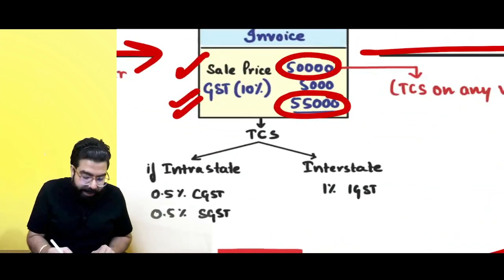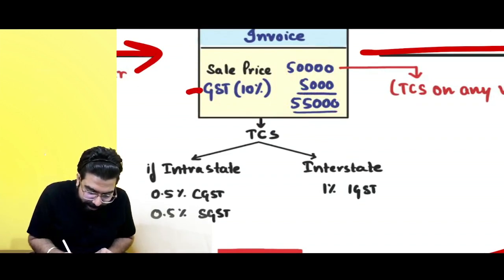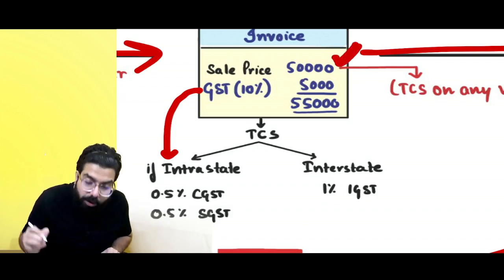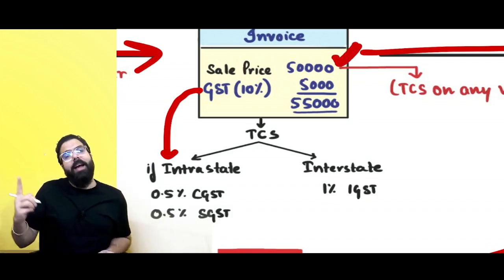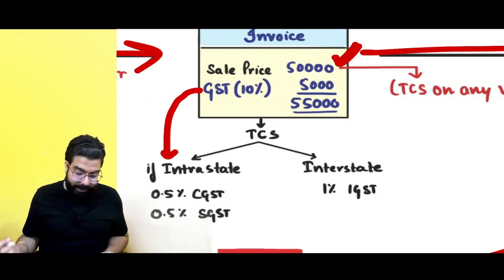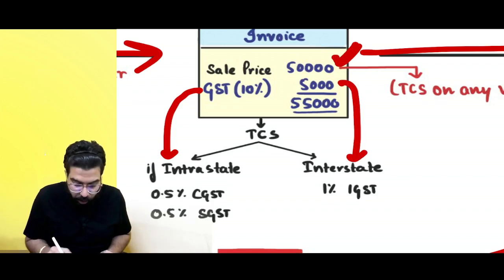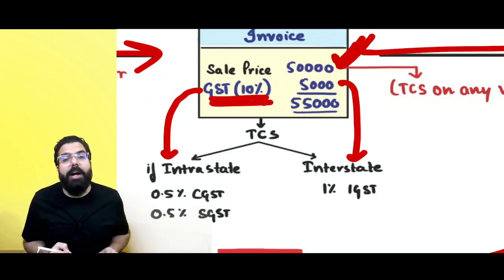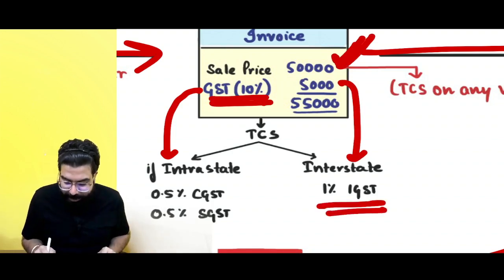Here, 50,000 rupees was the supply. If the supplier charged CGST — meaning it was an intrastate supply — then Flipkart will deduct on the value 0.5% CGST and 0.5% SGST. If it was an interstate supply, then the supplier will charge IGST and Flipkart will also deduct on the value 1% IGST.